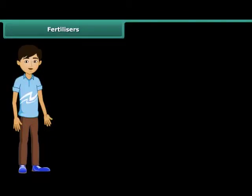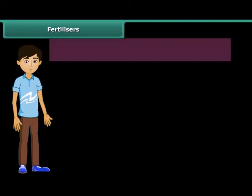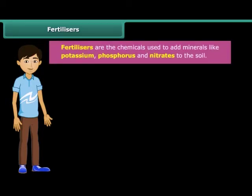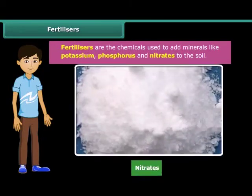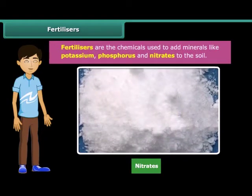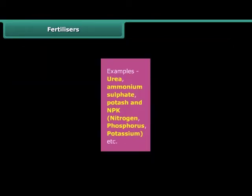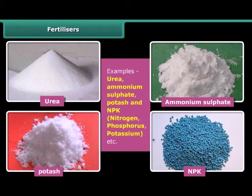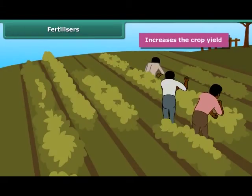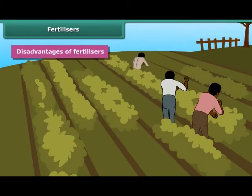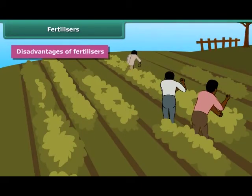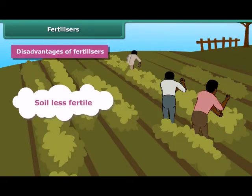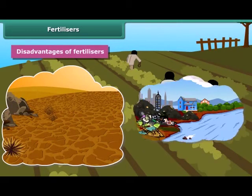Like manure, fertilizers are also used in replenishing the lost nutrients and minerals in the soil. Fertilizers are chemicals used to add minerals like potassium, phosphorus and nitrates to the soil. Fertilizers are produced in factories. Some examples of fertilizers are urea, ammonium sulfate, potash, and NPK — nitrogen, phosphorus and potassium. The use of fertilizers increases the crop yield. However, there are some disadvantages of using fertilizers: excessive use of fertilizers makes the soil less fertile and they have also become a source of water pollution.